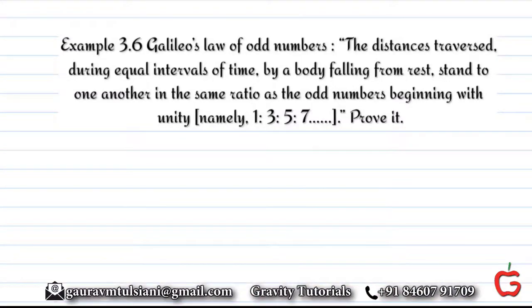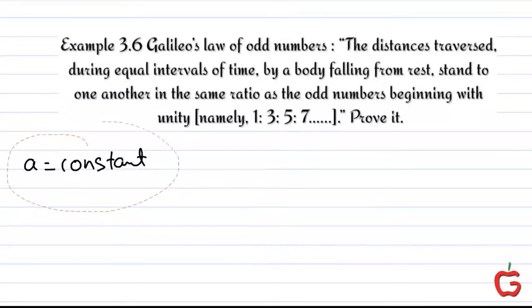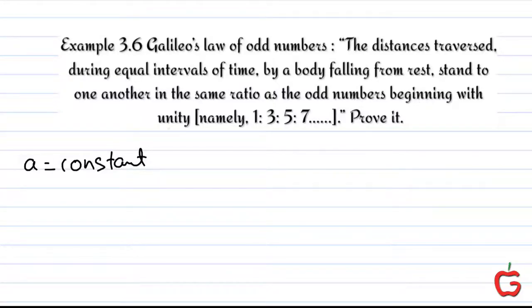Let's have a look at Galileo's Law of Odd Numbers today. This law is true in general for bodies having a constant, uniform acceleration. Galileo specifically used this law for freely falling bodies. What does this law say? The distances traversed during equal intervals of time by a body falling from rest stand to one another in the same ratio as the odd numbers beginning with unity.